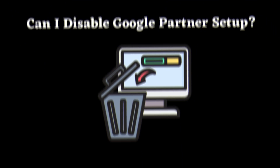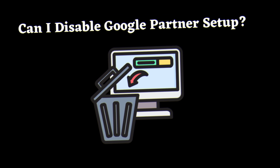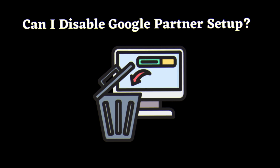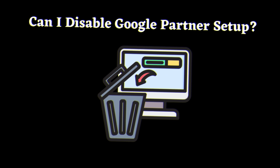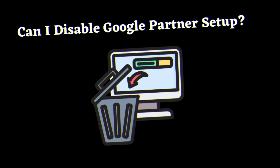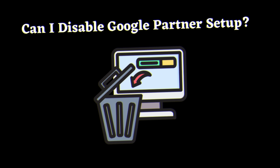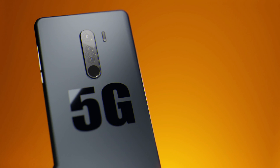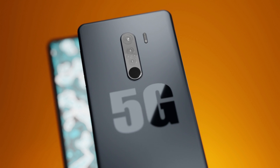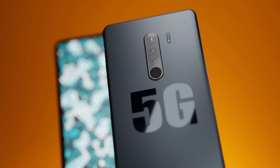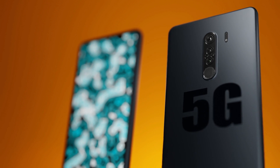Can I disable Google Partner Setup? Now, for the big question many users have: can you disable the Google Partner Setup app? Well, the short answer is no. Google, in its quest for a seamless user experience, doesn't provide a straightforward option to disable the app. It's an integral part of the Google ecosystem, ensuring that your devices work cohesively. While you may not be able to disable it, fear not — the app is designed to enhance, not intrude, on your digital experience.